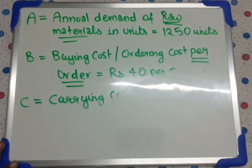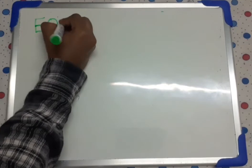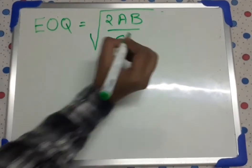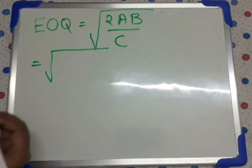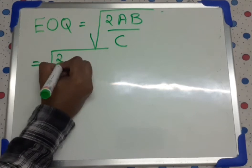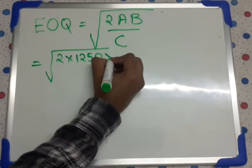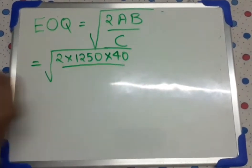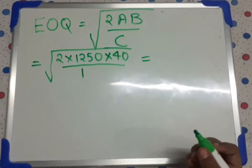Now we have to calculate the EOQ. So what is the formula for EOQ? The formula for EOQ is: EOQ is equal to the square root of 2AB divided by C. The values were given in the question. Now we will substitute: A is 1250 units, B is rupees 40 per order, and C is carrying cost, that is rupees 1 per unit. Now we will use a calculator and find the answer.